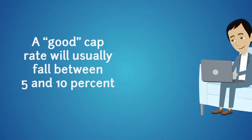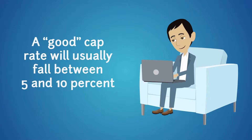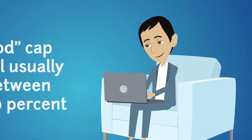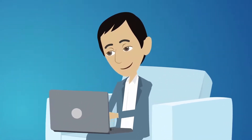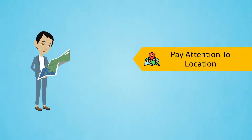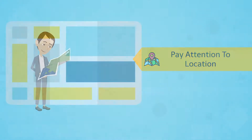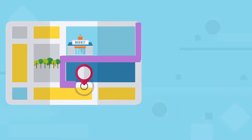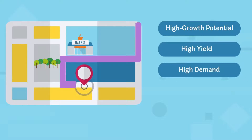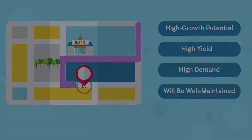Crunching the numbers on a multifamily property will help you make a smart investment, but how do you find potential investments in the first place? Tip number four: pay attention to location. If you have any experience in real estate, you've likely heard the phrase 'location, location, location,' which is one of the most important factors prospective tenants will consider. A good location will show high growth potential, high yields, high demand, and will be well maintained.